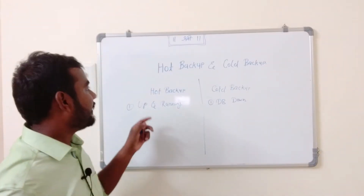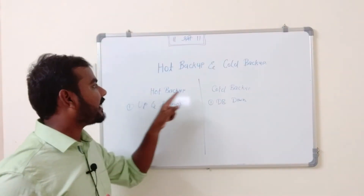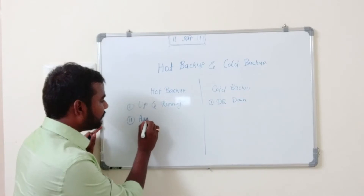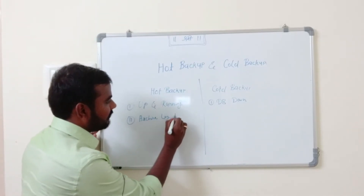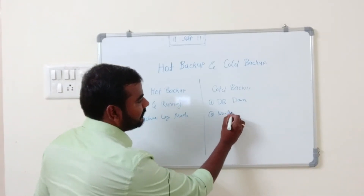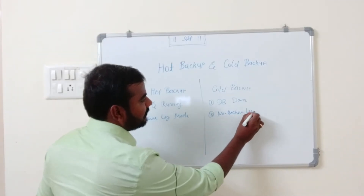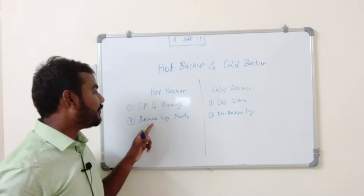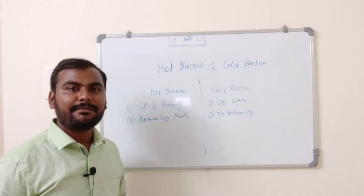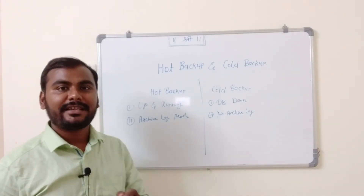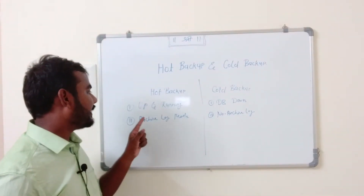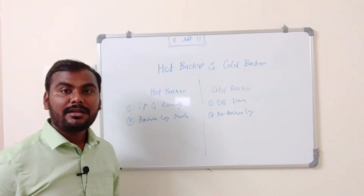The second point: when talking about the difference between hot backup and cold backup, for hot backup your database should be in ARCHIVELOG mode, whereas for cold backup this is NOARCHIVELOG mode. If your database is up and running but in NOARCHIVELOG mode and you try to take a backup, you will see an error message saying your database is in NOARCHIVELOG mode. For hot backup, your database must be in ARCHIVELOG mode.